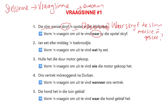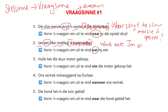Let's try the next one. 'Jan eet elke middag 'n tobroekie.' We have to form a question to find out what he eats — the object. We know that he's eating a tobroekie, a sandwich. So a tobroekie should not be part of our answer. We start with the question word: wat. Immediately after the question word we have our verb: eet. So wat eet. The rest of the sentence remains the same: Jan elke middag. 'Wat eet Jan elke middag?' And don't forget your question mark.